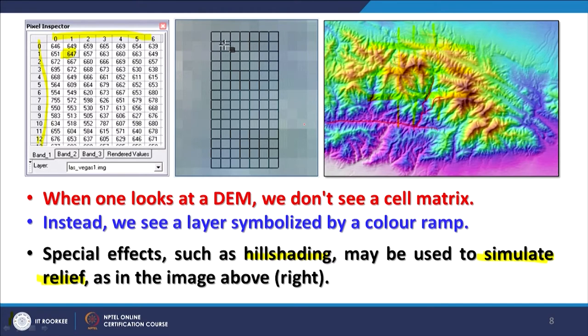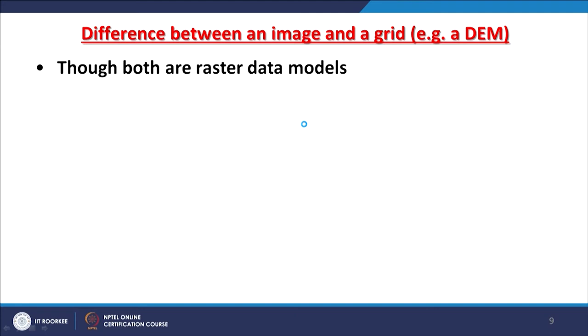Everyone can understand from the hillshade which is higher ground, which is lower ground, what are the ridges, what are the valleys — the terrain appears very close to reality. When representing in gray form without hillshade, it becomes more difficult to understand the terrain. Both image and grid are raster models, and we combine satellite image with DEM to create a 3D perspective like in Google Earth. In the background, a digital elevation model is used first to create a 3D perspective or hillshade, and on top of that a satellite image is draped.